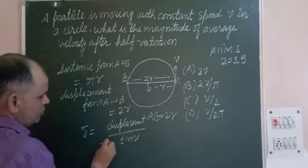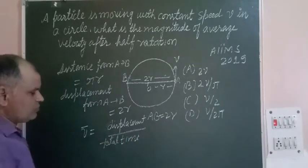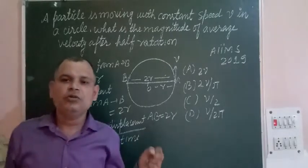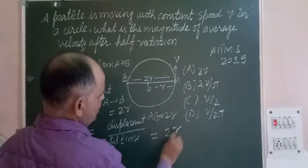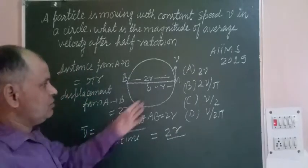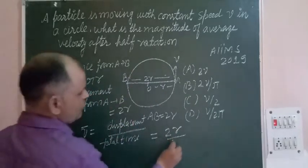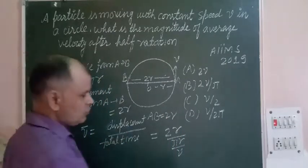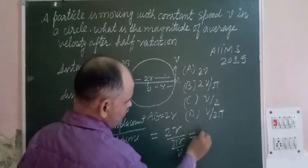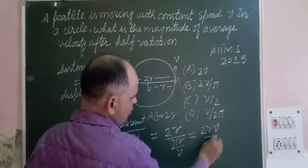So displacement is 2R and total time taken to cover this distance which is πR with constant speed V is πR over V. So πR over velocity, this is time.